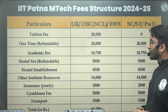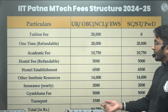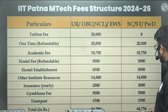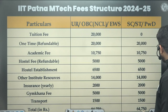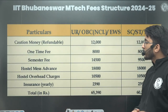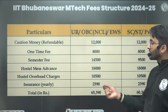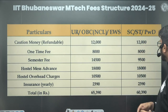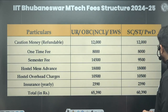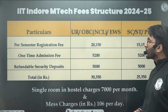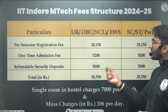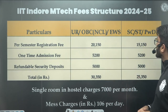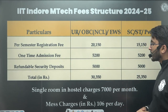For IIT Patna, the total is ₹84,750 for General, OBC-NCL, and EWS, and around ₹64,000 for SC, ST, and PWD. For IIT Bhubaneswar, the total amount is ₹65,390, and ₹60,390 for SC, ST, and PWD. For IIT Indore, the total amount is ₹30,000 for General and around ₹25,000 for SC, ST, and PWD category. The single room hostel charges is ₹7,000 per month and mess charges is ₹106 per day.